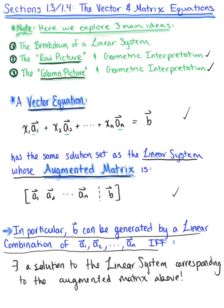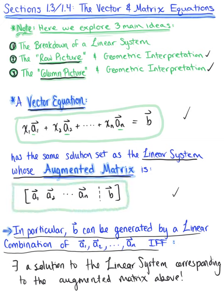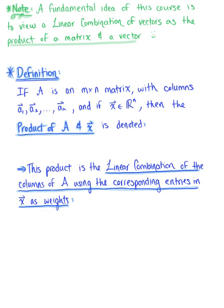So these are our first two equivalent formats: the vector equation and its corresponding augmented matrix. Now let's think about the corresponding matrix equation. One of the most fundamental ideas in Linear Algebra 1 is to view a linear combination of vectors as a product of a matrix and a vector. Before we look at the matrix equation, let's look at the formal definition for the product of a matrix and a vector, because this is what we need.